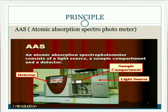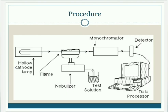In AAS, the light source is a hollow cathode lamp. In the sample compartment, a nebulizer is present which acidifies the sample and introduces it into the flame. The detector separates the wavelength and displays the result. When a salt solution is put into the flame, the solvent is first vaporized, then on further heating in the flame, molecules are converted into gaseous atoms. Some of the atoms are excited and some are unexcited; the unexcited atoms absorb the radiation.